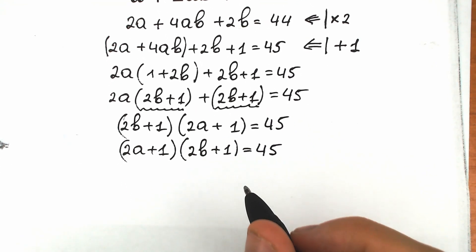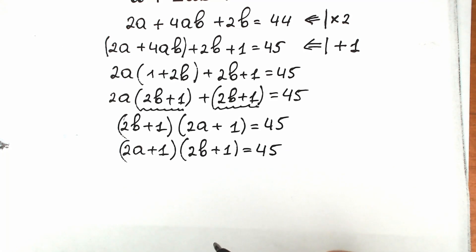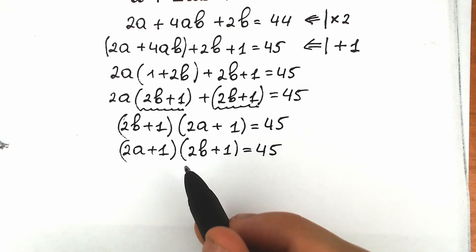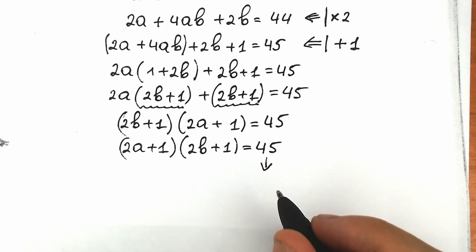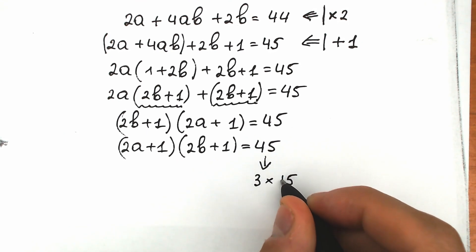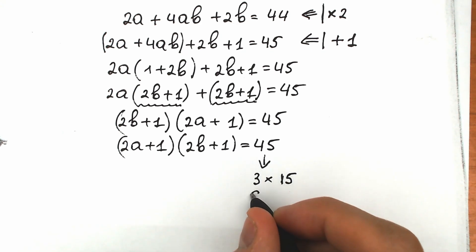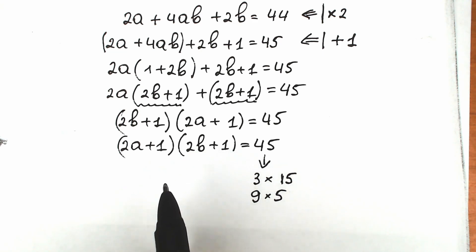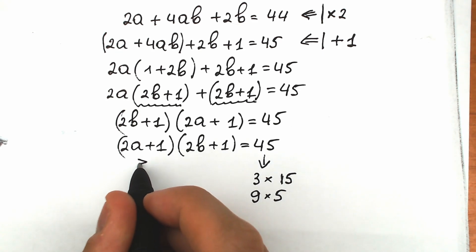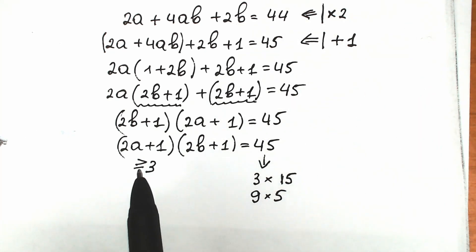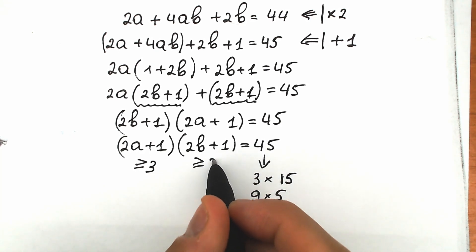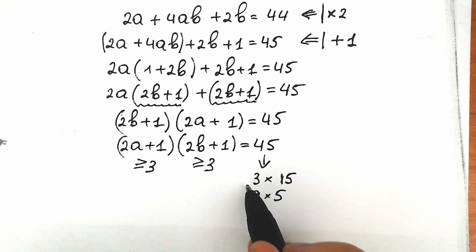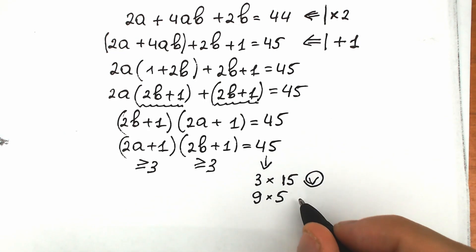This is a really important moment and a great approach. If we have a product of two parentheses on the left-hand side, we need to express our constant as two values that multiply to give it. 45 can be written as 3 times 15, or as 9 times 5. Since we're looking for positive integers, both parentheses must be at least 3, so both cases — 3×15 and 9×5 — work for us.